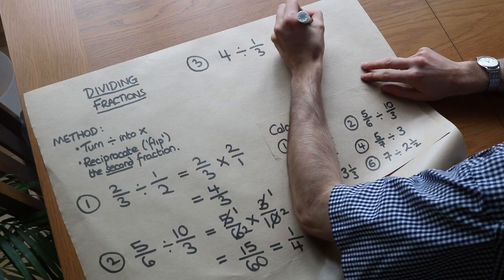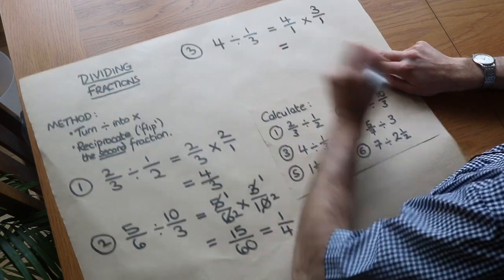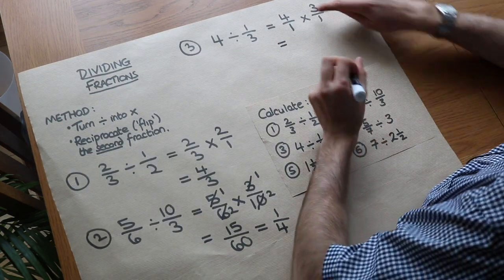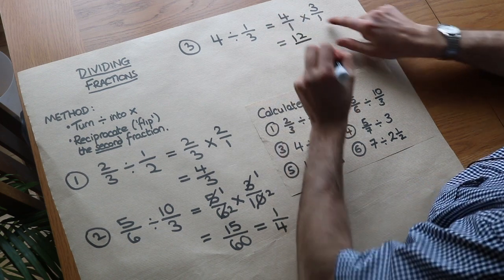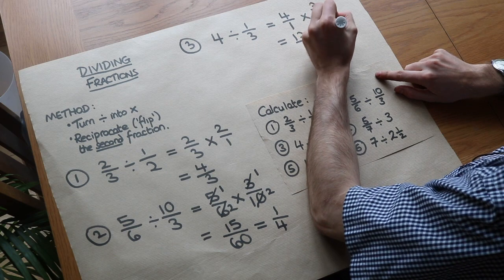The divide we turn into a times, and we flip the second fraction. So we get 4/1 times 3/1. 4 times 3 is 12, 1 times 1 is 1. And don't leave your answer like that—12 divided by 1 is just 12.